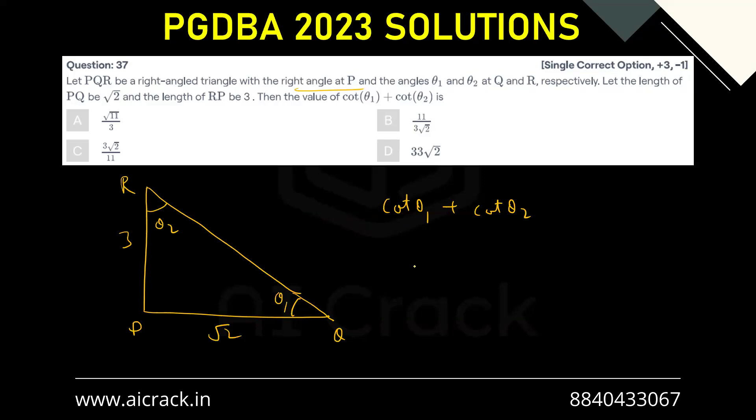cot(θ₁) is nothing but PQ upon PR and cot(θ₂) is nothing but PR upon PQ. So PQ upon PR is √2/3 and PR upon PQ is 3/√2.